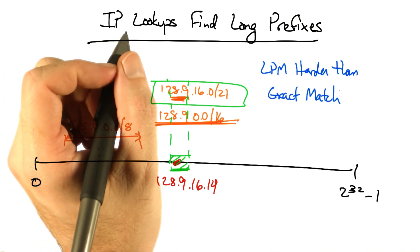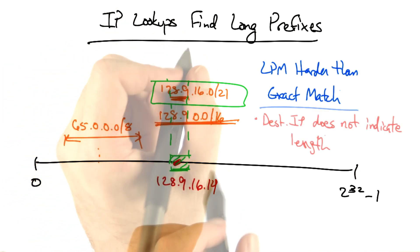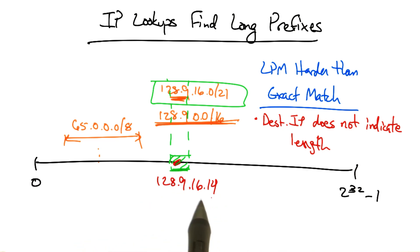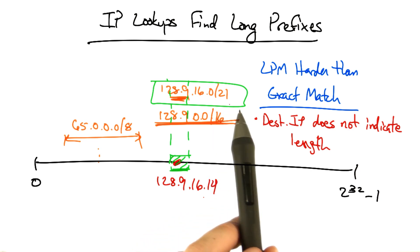Longest prefix match is harder to perform than exact match. For one, the destination IP address does not indicate the length of the longest matching prefix. So some algorithm needs to determine the length of the longest matching prefix, which in this case is 21.